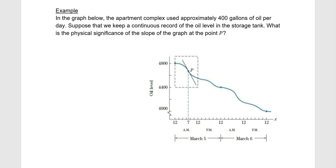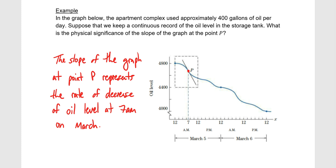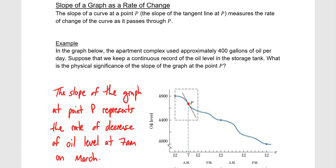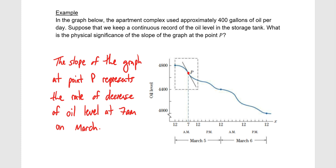If we're looking for the slope of the graph at point P, we can think of it as the slope of the tangent line at point P because they represent the same thing. Since slope is a rate of change, we can say that the slope of the graph at point P represents the rate of decrease of oil level at 7 a.m. on March 5th — we know it's a decrease because this is a decreasing line, falling left to right. So it's that instantaneous rate of change, the instantaneous rate of decrease of the oil level.